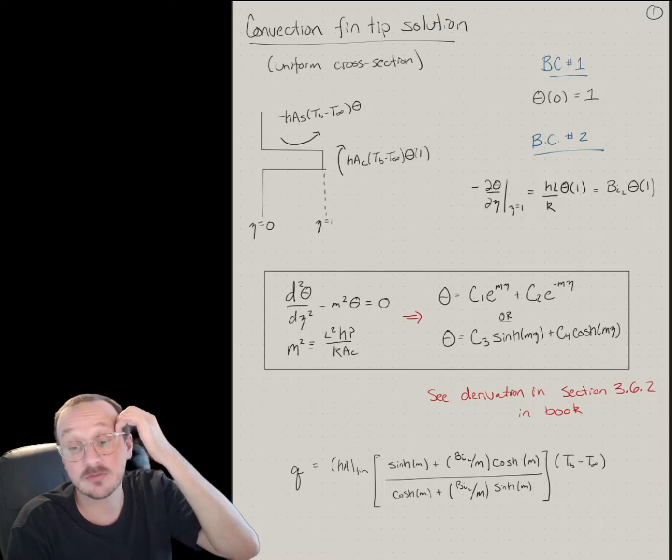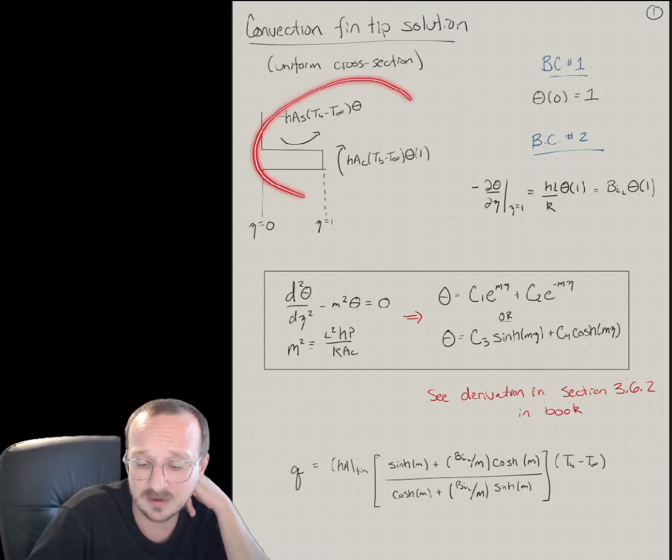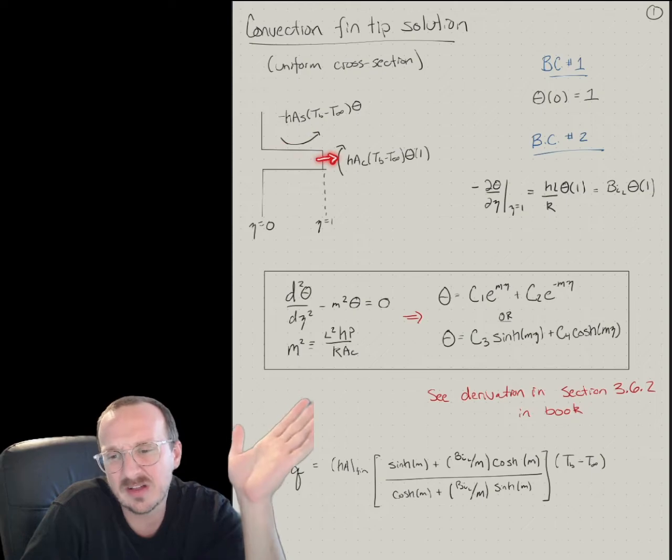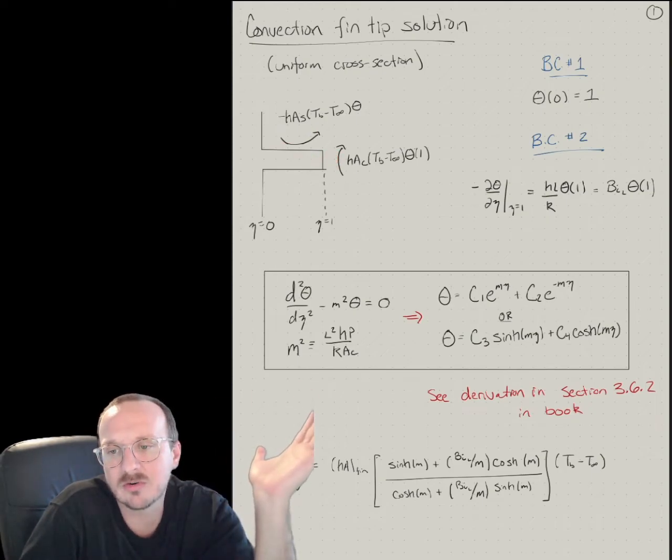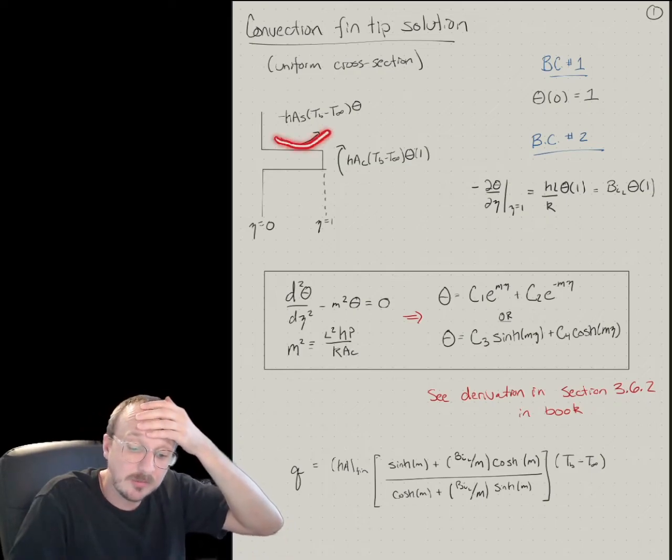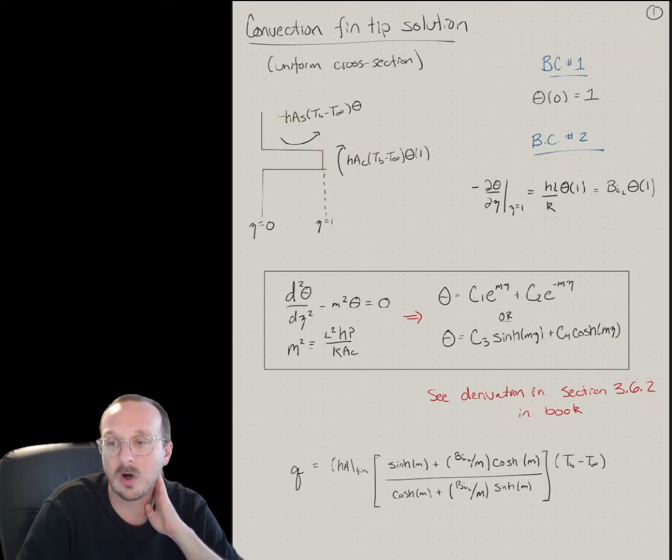So now let's talk about this full scenario where, this is probably the most realistic, you've got a fin and of course convection can happen everywhere. So it's adiabatic if heat loss from the surface is negligible, but let's just say in the general case it's not. We have heat loss from the surface area and heat loss from the cross-sectional area at the tip at Z equals L.